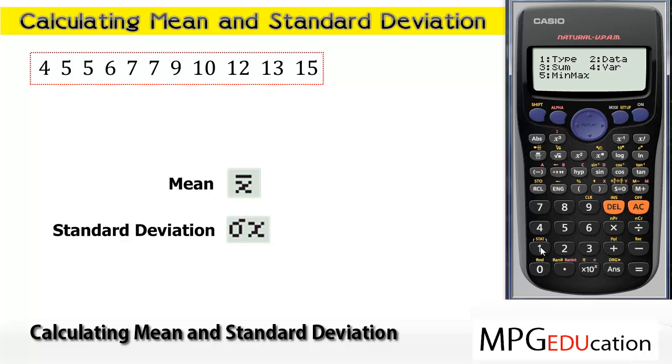For the mean, Shift, 1, 4, 2, and then press equals. You'll notice the symbol on the screen here is the same as this symbol here. That's the mean.